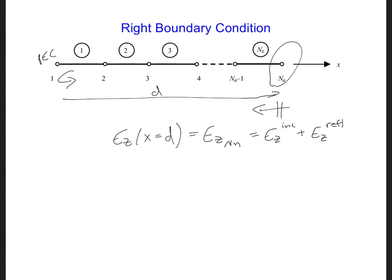The incident wave is a plane wave with the electric field being e naught magnitude e to the j beta d, so we're writing this plane wave in the frequency domain. And then the reflected wave will also be a plane wave propagating, but it'll be propagating in the opposite direction.